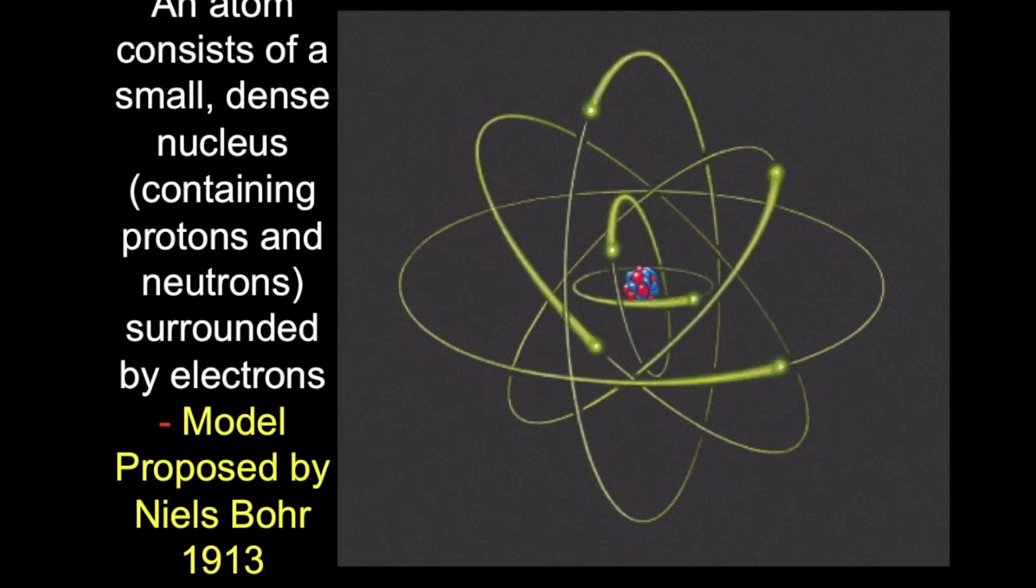The nucleus is where most of the mass of an atom is located and it contains the protons and the neutrons. Protons and neutrons have roughly the same mass and they are much more massive than electrons. Protons have positive charge and neutrons don't have an electric charge.